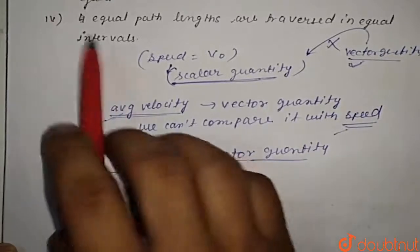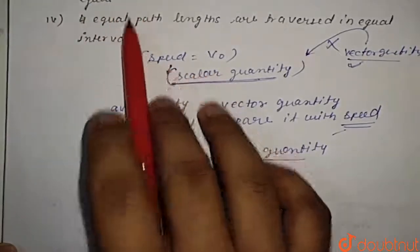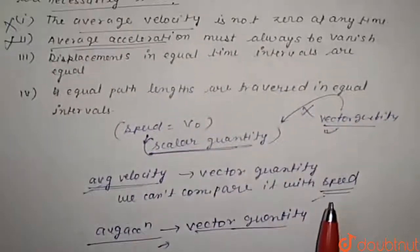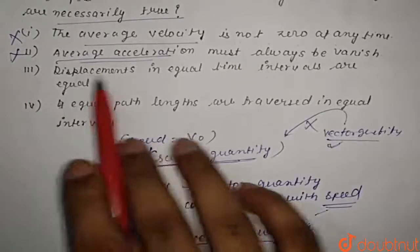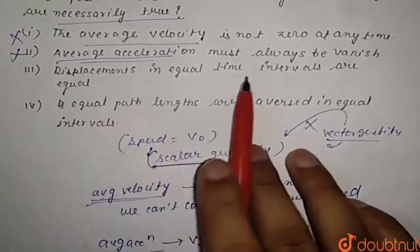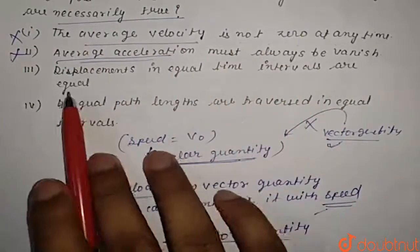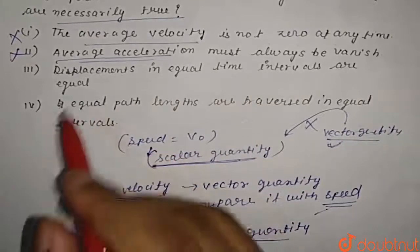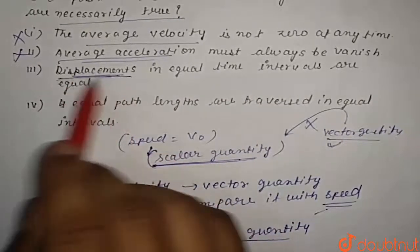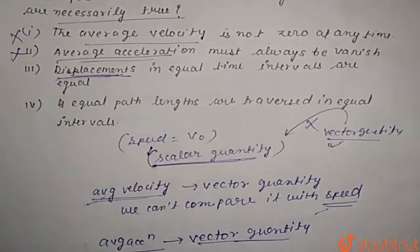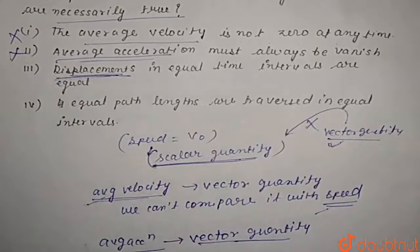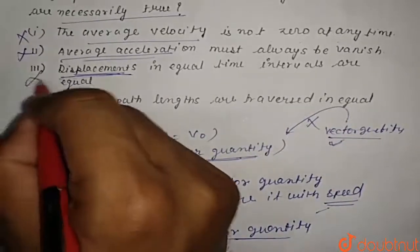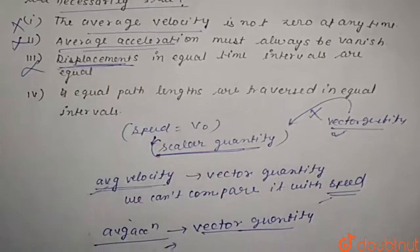Now the third option says that displacement in equal time intervals are equal. Displacement is also a vector quantity and we cannot compare it with speed, which is a scalar. That's why this will also be incorrect.